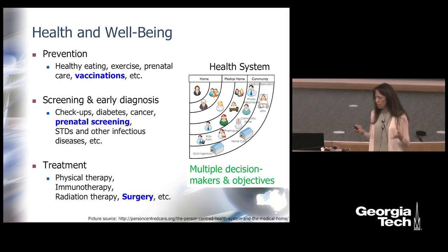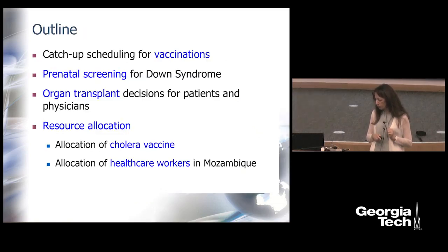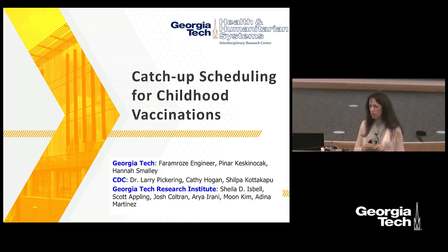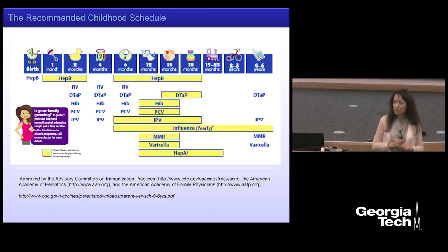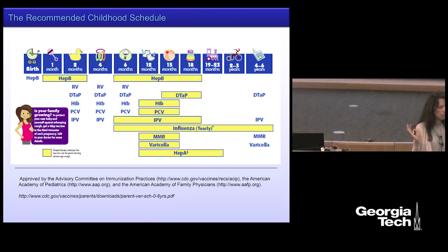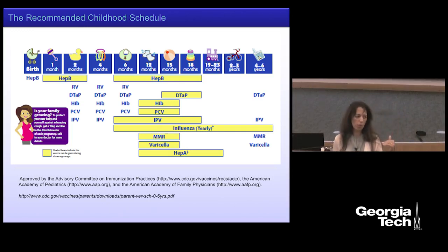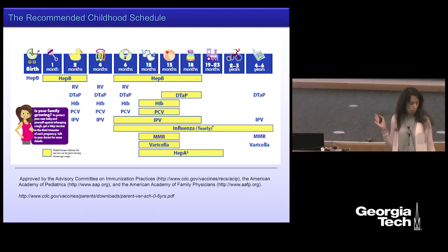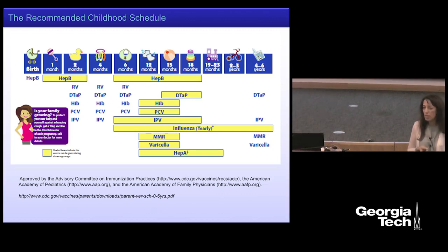We'll talk about vaccinations on the preventive side, screening decisions, and an example from surgery on the treatment side. Our first example is from prevention: catch-up scheduling for childhood vaccinations. You may remember getting vaccinated when you were younger. This is the recommended vaccine schedule posted every year by the CDC and the American Academy of Pediatrics, listing vaccines for preventable diseases and their schedules. Some require multiple doses at particular times. It turns out in the US, about half of children fall behind with their vaccinations by age two — a pretty large percentage.